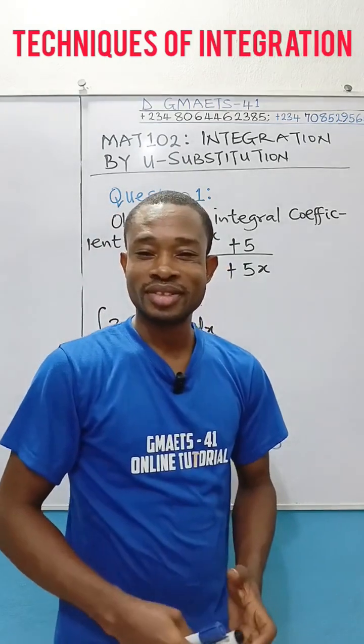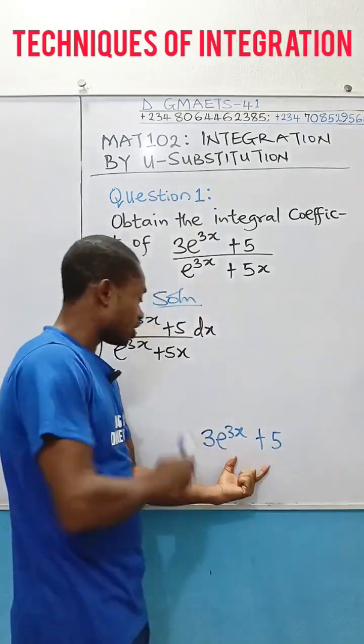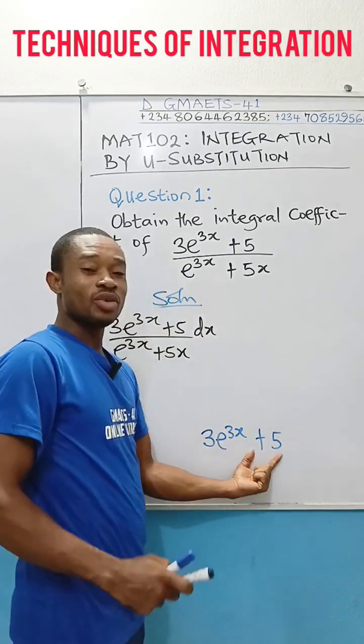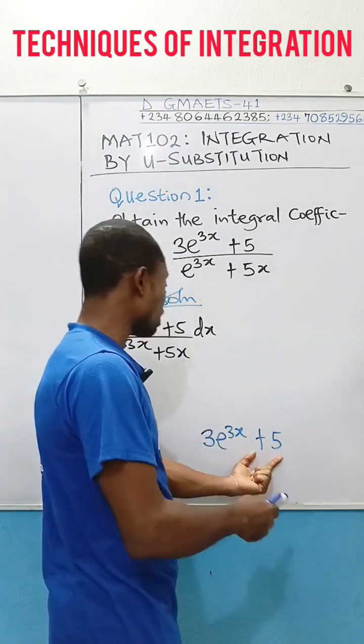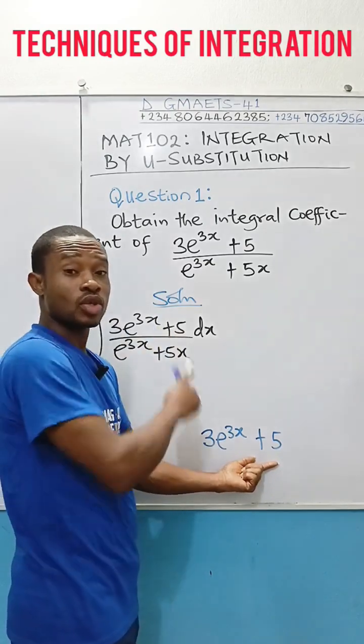This is super cool. Observe that by differentiating the denominator, you got this. What you obtain, which is the derivative of the denominator, is exactly what you have in the numerator.